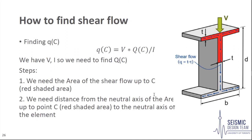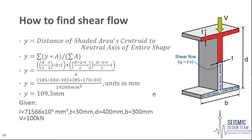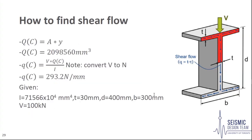Finally, we find the shear flow at point C, on the neutral axis. The area covered by the shear flow up to C is b multiplied by t, added to d minus t divided by 2, giving 90,200 mm². The distance y from the neutral axis of this composite area to the neutral axis of the entire element requires a centroid formula, and y was found to be 109.3 mm. This gives a first moment of area of 2,098,560 mm³ and a shear flow of 293.2 N/mm at point C, which is the maximum shear stress.